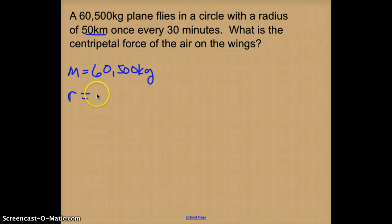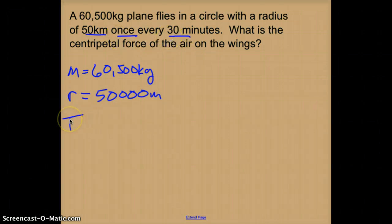So I have a radius of, I need this in meters, so I'm going to multiply it times 1,000 meters once every 30 minutes, so there's my time period. I need that in seconds, so 30 times 60 is 1,800 seconds.